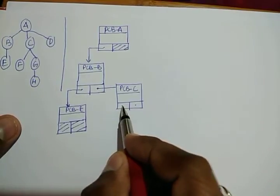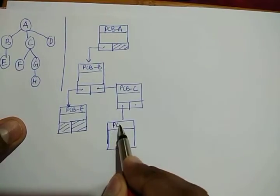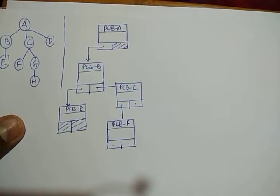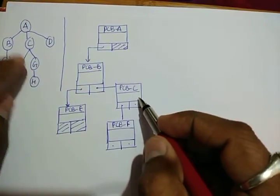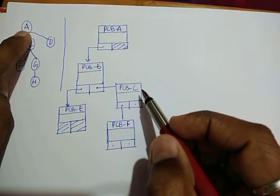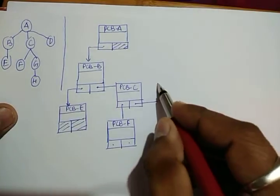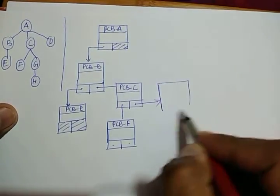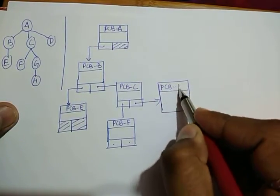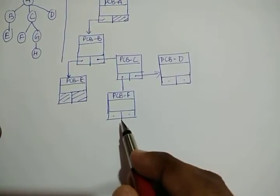Now come to C: C is having a left child F, so it will be connected to the PCB of F, which has two fields. The second part of C's PCB: does parent A have a further child? Yes, D. So this second part of C will be connected to the PCB of D, which has two parts we will discuss later.